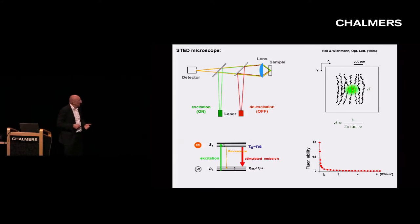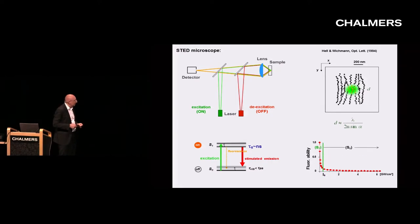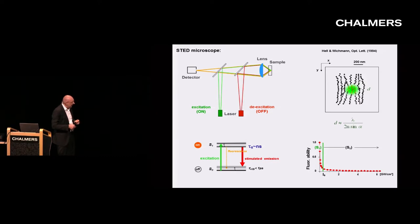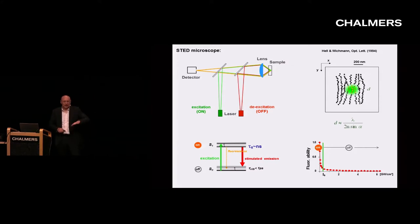You have to apply a certain threshold intensity to make sure there is always one photon at a molecule that kicks it down to the ground state. This fluorescence probability as a function of the intensity of the red beam shows that once intensity is at or above the threshold I_s, you've turned it off. You can put in as much green light as you want — in essence, the molecule will stay off because as soon as it goes to the on state, it's instantly pushed back down to the ground state.